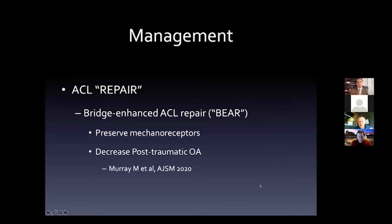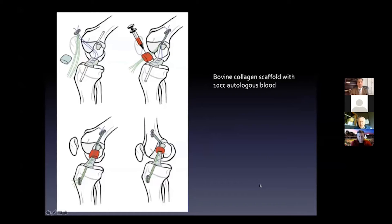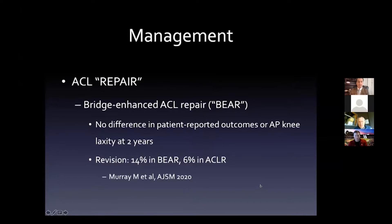In terms of management, repairs have received some interest recently. Original repairs had a 50 percent failure rate just from sewing side-to-side due to synovialization at the ends of the tear. The BEAR - Bridge-Enhanced ACL Repair - developed by Dr. Murray and others has looked at potentially preserving mechanoreceptors and decreasing post-traumatic osteoarthrosis. It essentially places arthroscopic sutures in the distal stump, delivering it up to the proximal area with a scaffolding of bovine collagen filled with 10 cc's of blood. The first human study published last year showed no difference in patient-reported outcomes or AP knee laxity at two years. However, the revision rate is 14 percent in BEAR patients versus 6 percent in ACL reconstruction.